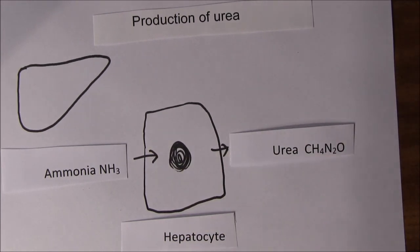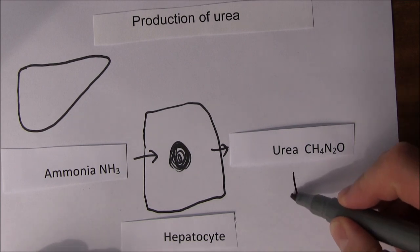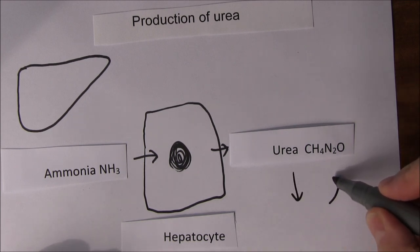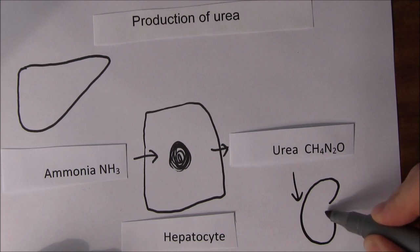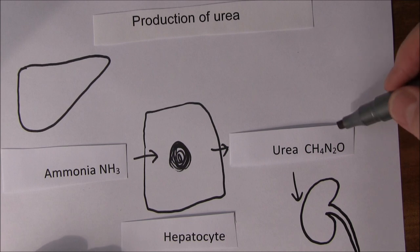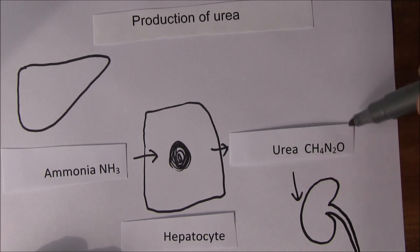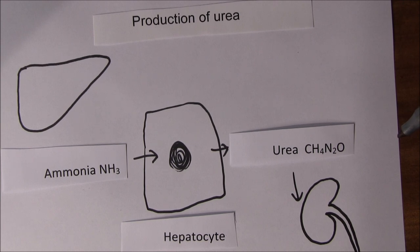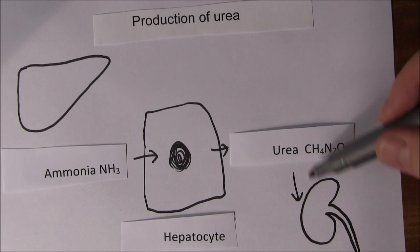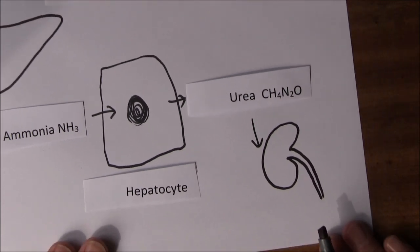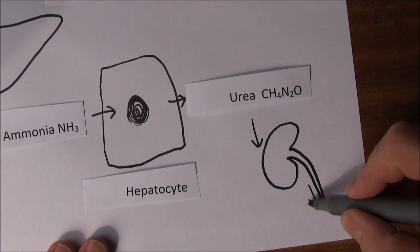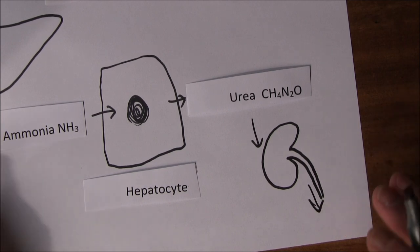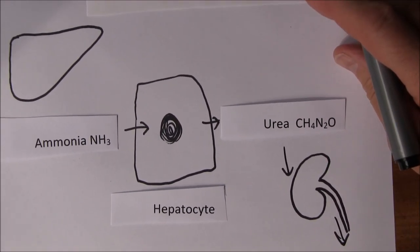And the urea, because it's highly soluble, can just go off to the kidneys, where it can be excreted in the urine. And not only is excreted in the urine, but it also performs a useful function within the kidney, promoting reabsorption of water from some of the renal tubules. So it actually performs a useful function when it's on its way out. But eventually the urea will enter the urine as the waste product of this nitrogen metabolism.